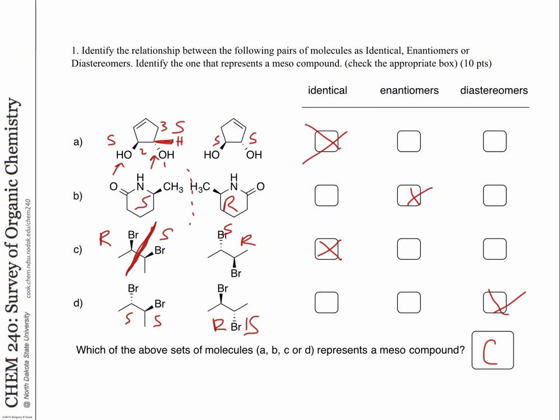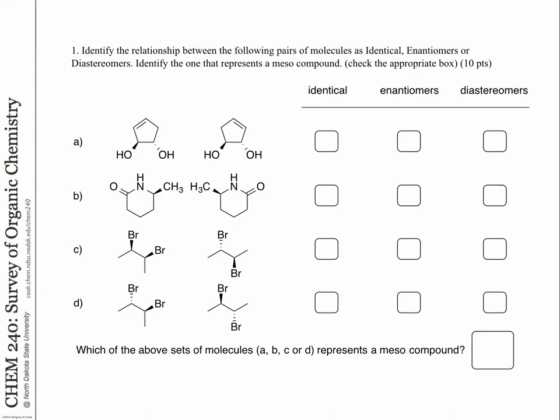Any questions on this? I imagine on the final, there will be a similar kind of problem, and it probably will include more examples of constitutional isomerism, resonance forms, and things like that, so we're going to combine all these relationships probably into one problem. So be prepared for that.